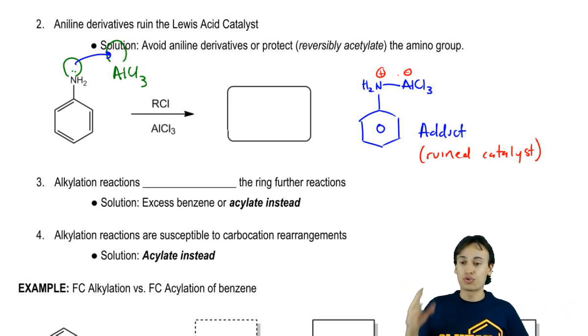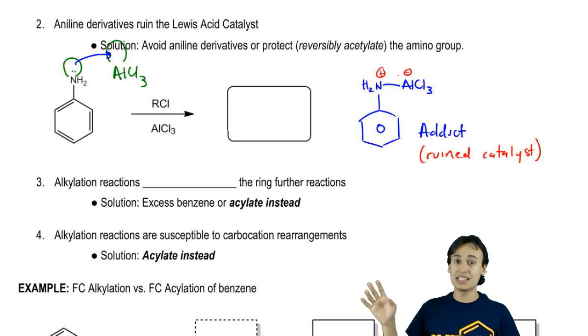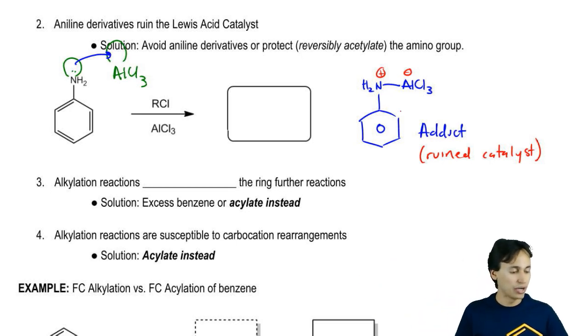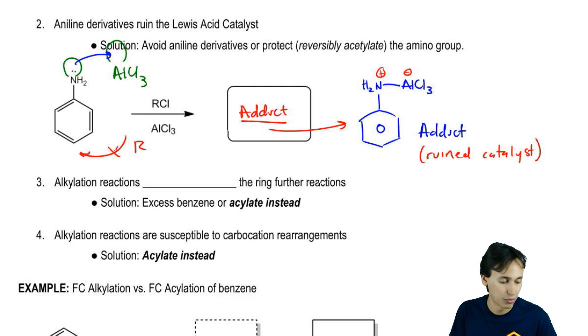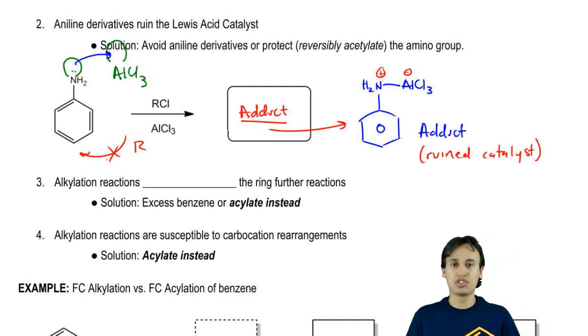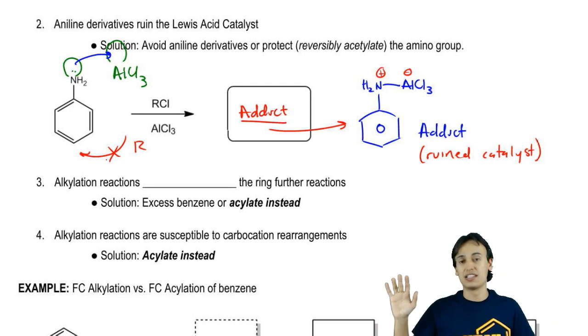The answer here is that if you're trying to run a Friedel-Crafts alkylation on a benzene, make sure that you avoid aniline at all costs. You cannot use aniline and a Lewis acid catalyst. The answer would be the adduct, but it would not be the right reaction. You would not get an R group on the ring. So just avoid these things at all costs.